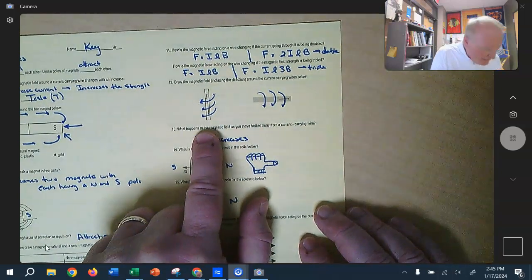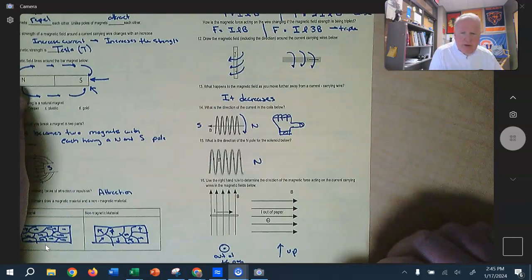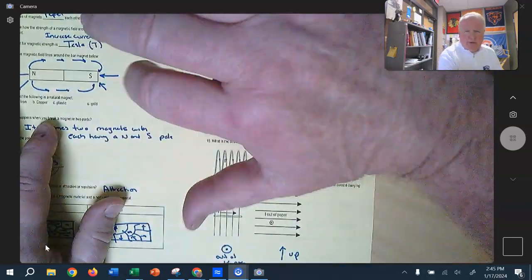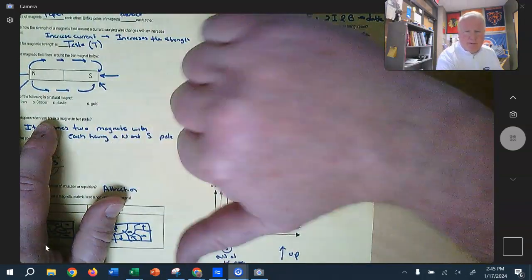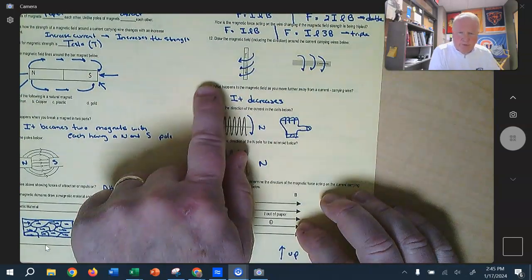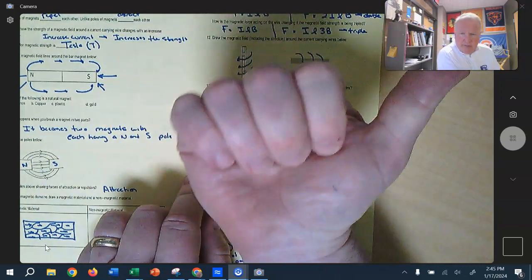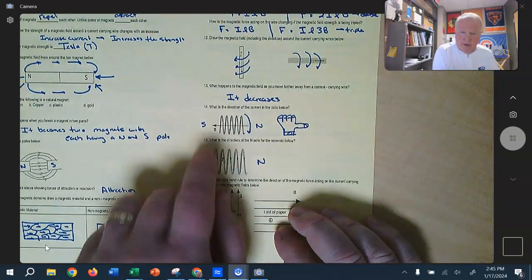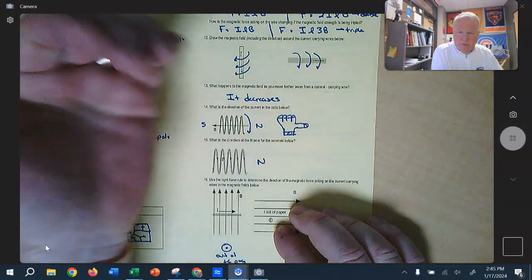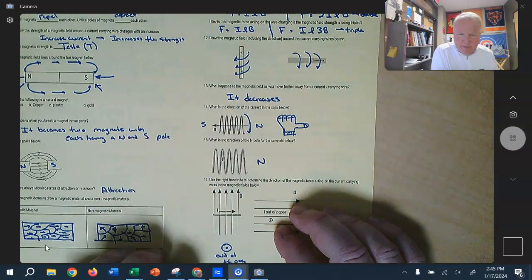These ones just ask you to use the right-hand rule. And so if, sorry about this, just got to look. If current is going down, take my right hand, put my thumb down, my hand wraps around this way so that we get this, and then this one, the current is going this way, so I take my right hand, put my thumb, my fingers are wrapping this way, and so the current is going to come over the top of the wire and then back down.